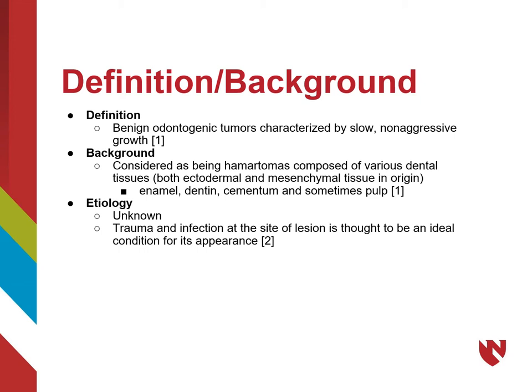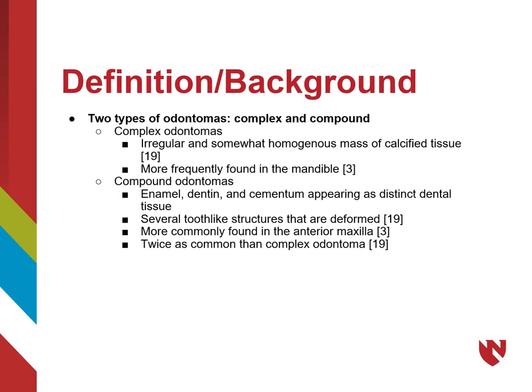The etiology of odontomas is relatively still unknown; however, trauma and infection at the site of the lesion is thought to be an ideal condition for its appearance. Odontomas are classified into two distinct forms: complex and compound. Complex odontomas are seen radiographically as a somewhat homogeneous mass of calcified tissue, and unlike the compound form, complex odontomas are more frequently found in the mandible.